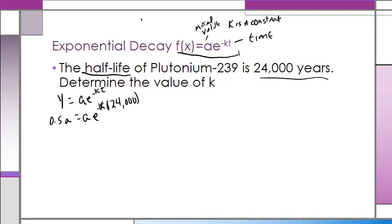Now, let's work on solving this. Well, the first thing I can do is I can divide both sides by A. When I do, I've got 0.5 equals E raised to the power of negative k times 24,000.